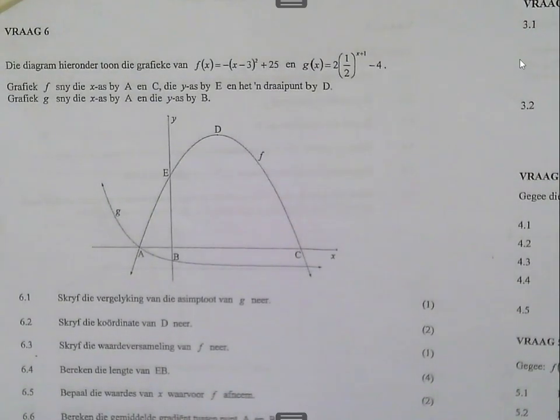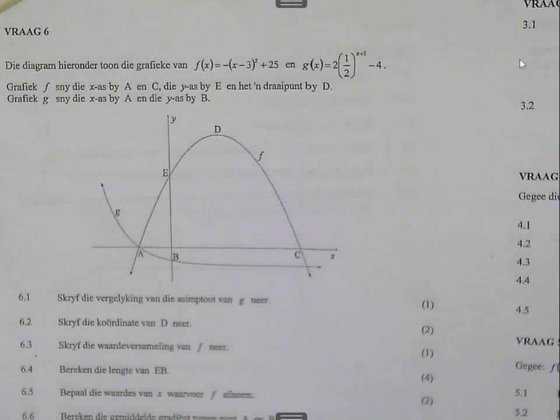So the first question they ask is the asymptote, the equation of the asymptote of g. You can do that? It's the exponential function. It only has one asymptote. Write down the coordinates of d. You can do that. The range of f, that's the parabola. I hope you can do it. Range is the y-value. So what's the smallest y-value? What's the biggest y-value? Then they're asking you for the length of EB.